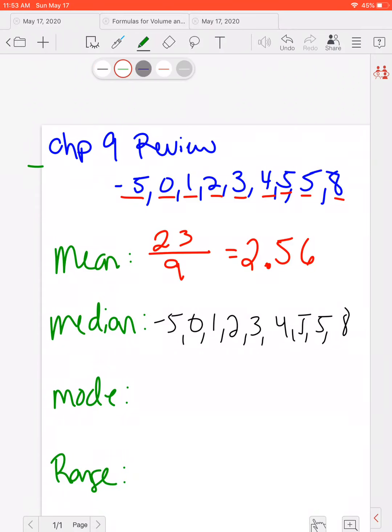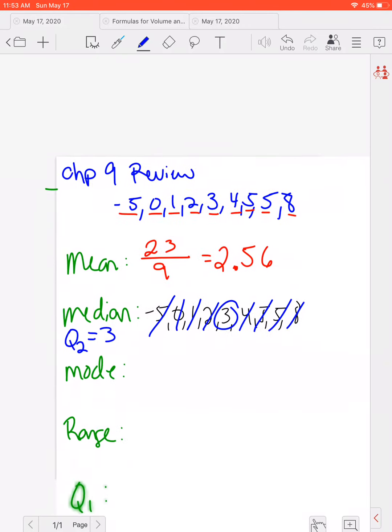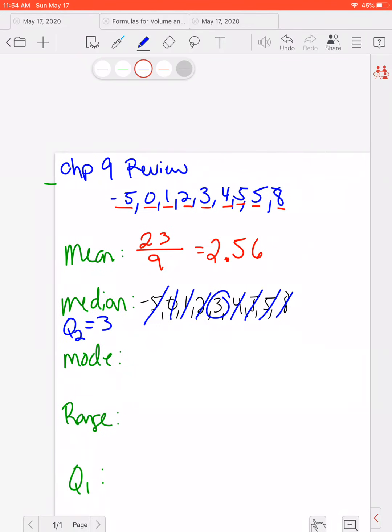So we're going to find the middle number. We cross 1, 1, 2, 2, 3, 3, 4, 4. My middle number is 3. We also sometimes call this Q2 for quartile 2.